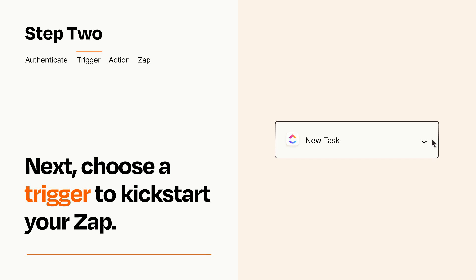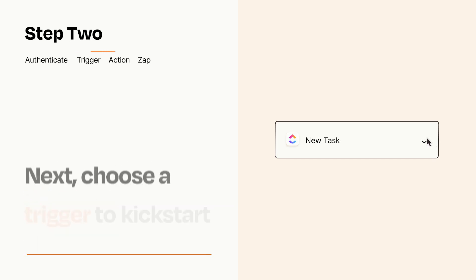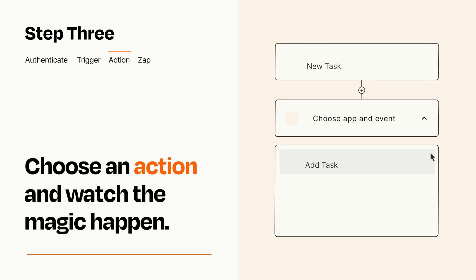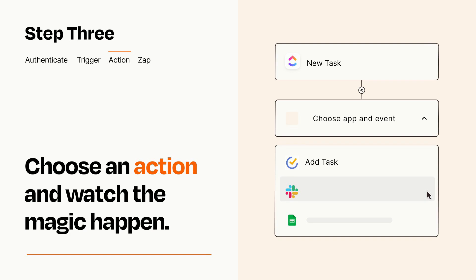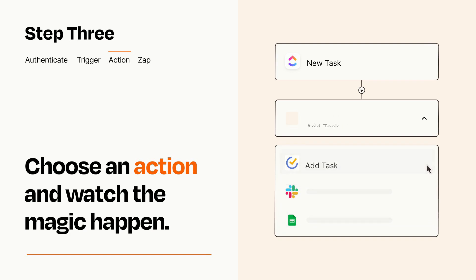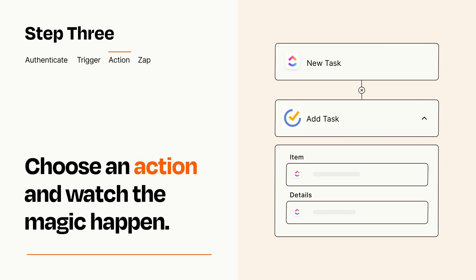This last part is where the magic happens. Choose the action you want to happen in your target app. You'll see a bunch of fields where you can specify the details of your Zap. You can type free-form text or pull data in from your trigger step as needed.